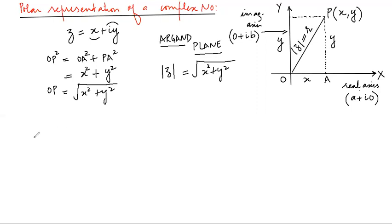As far as polar representation is concerned the two important parameters: one is modulus and second is argument of the complex number. Modulus of complex number we already know, but on this Argand plane we understood that OP is our modulus and that we have represented by r.